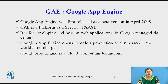Google App Engine is cloud computing technology. It is more reliable because failure of any server will not affect either the performance of the end user or the service of Google. It virtualizes applications across multiple servers and data centers. Other Google Cloud-based platforms include offerings such as Amazon Web Services and Microsoft Azure service platforms.